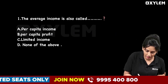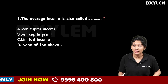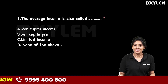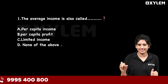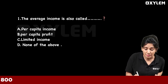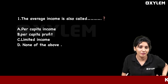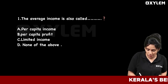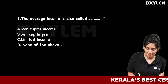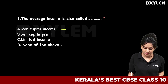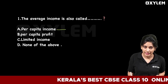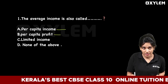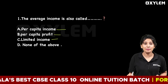Question number 1: The average income is also called dash. Let's look at the options. Option A: Per capita income. Option B: Per capita profit. Option C: Limited income.